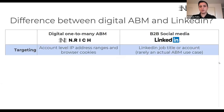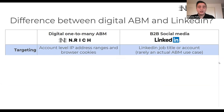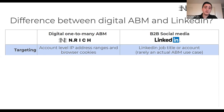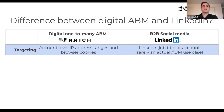Many B2B companies start their account-targeting efforts with LinkedIn advertising, but it can be more costly and deliver fewer results. Enrich targets advertising based on account IP address levels — you can target company IP addresses and associated cookies, tracking engagement down to the cookie level within each account. LinkedIn targets by job titles and accounts, but requires users to be active on LinkedIn to see ads, making it rarely a true ABM use case.